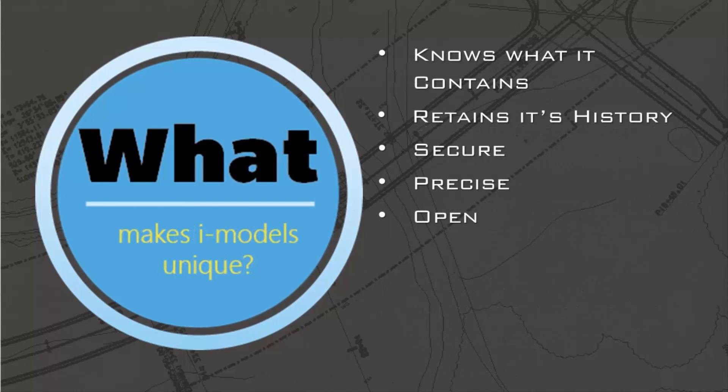So what makes an iModel unique? Well, an iModel knows what it contains — you don't need the original authoring application to be able to query it. An iModel knows its origin, so it can tell you all about its source, the date it was created, and its history. An iModel is secure, so they're read-only and they won't be modified by people who don't have rights to do it. An iModel is precise — geometrically, geospatially, and from a business information standpoint.